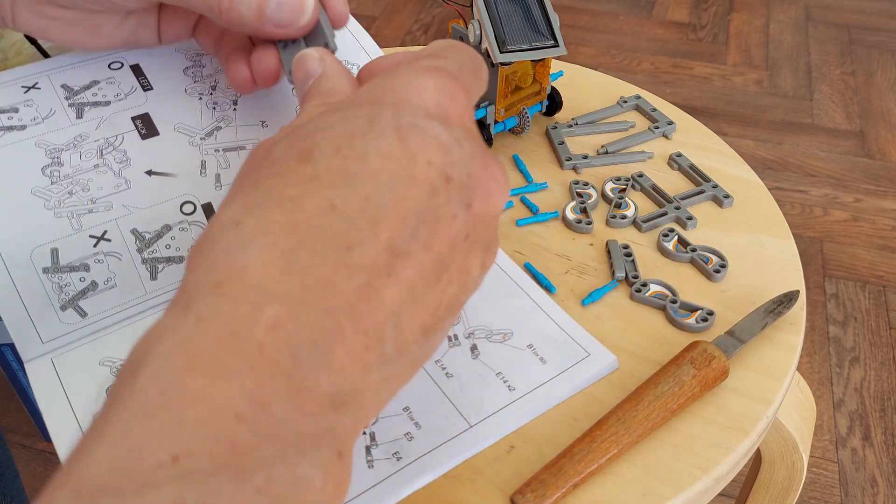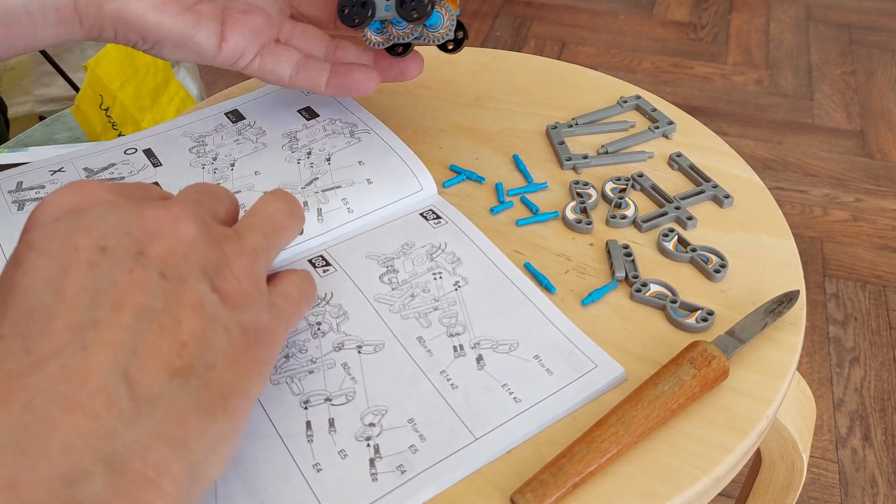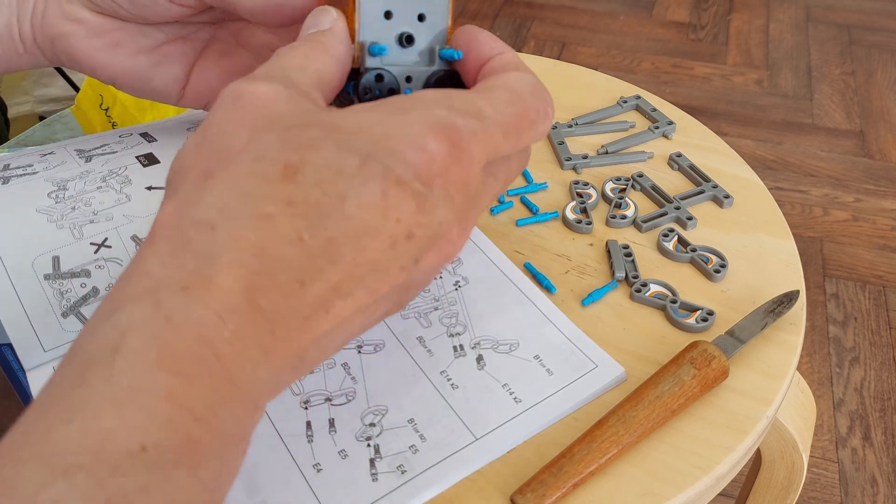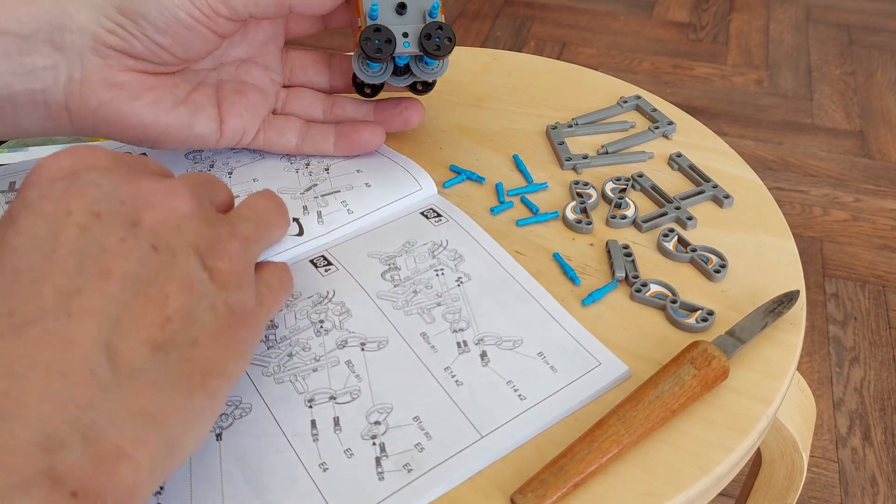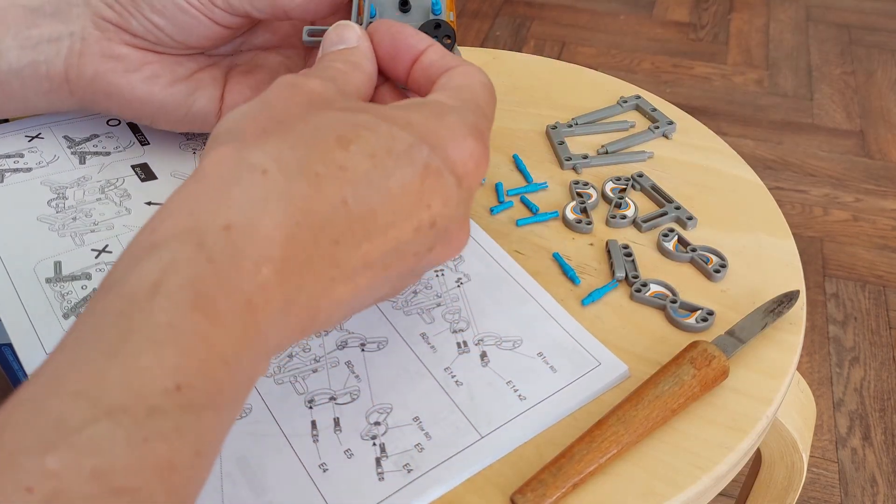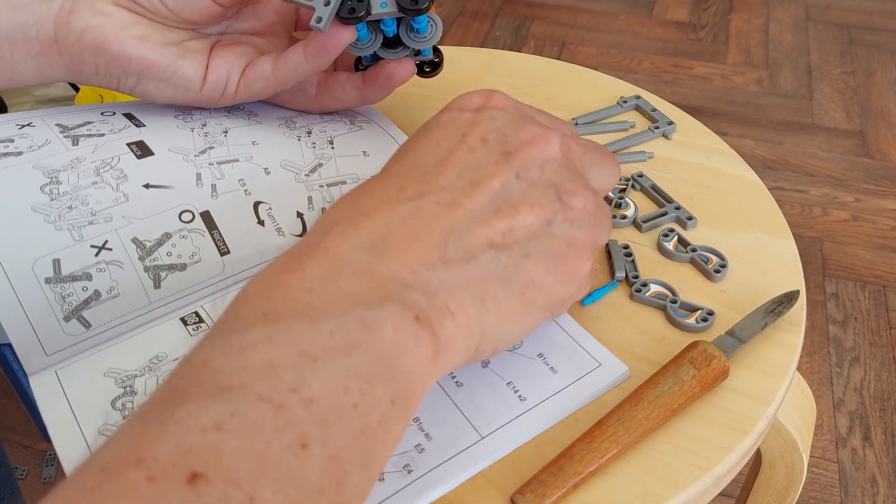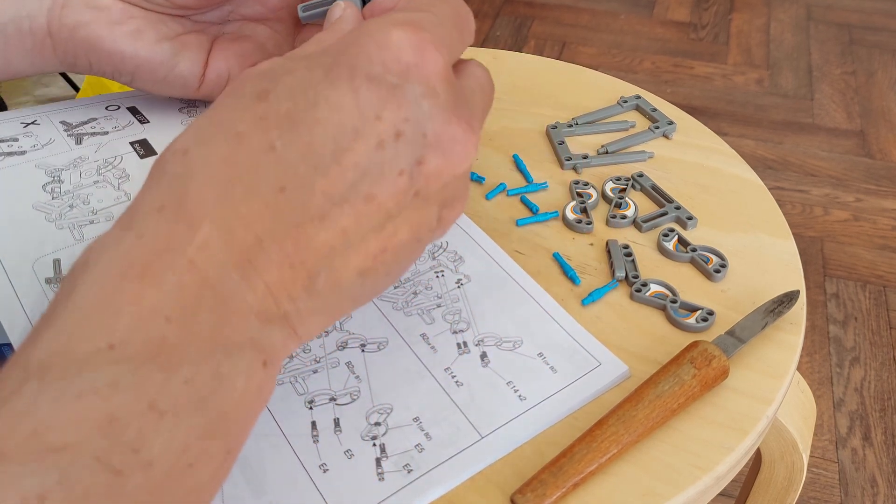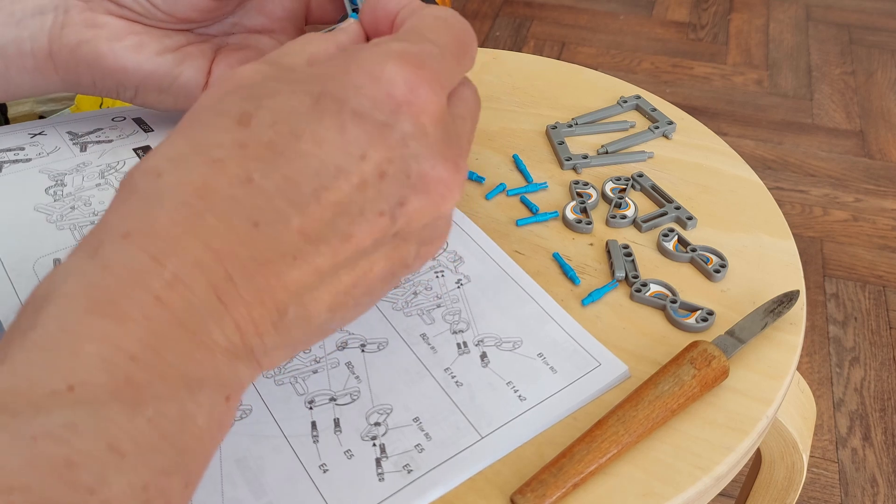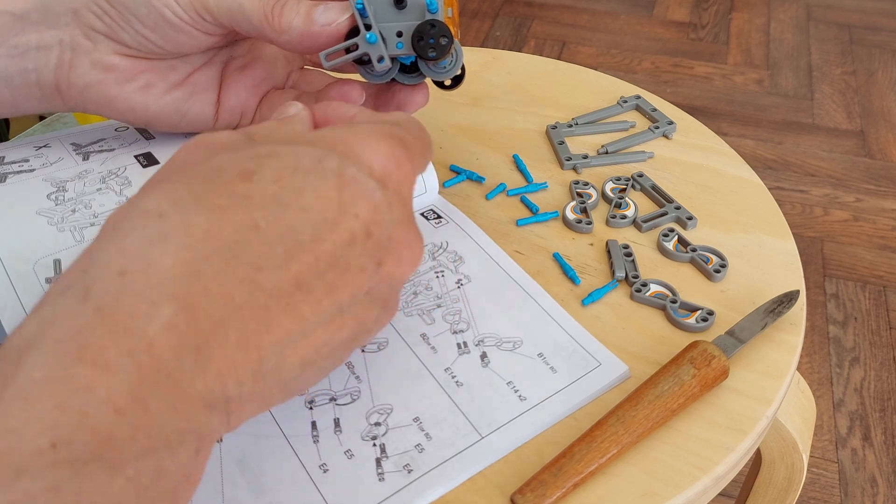Didn't need those two bits. Now, facing that way around, one of those goes on there, and then one of them into there.